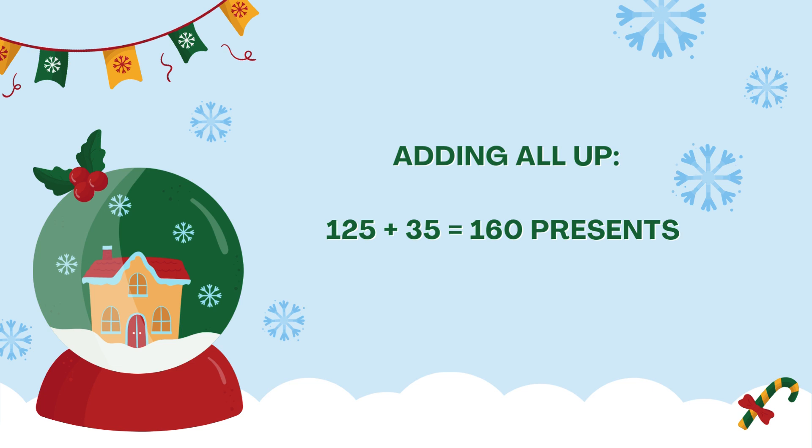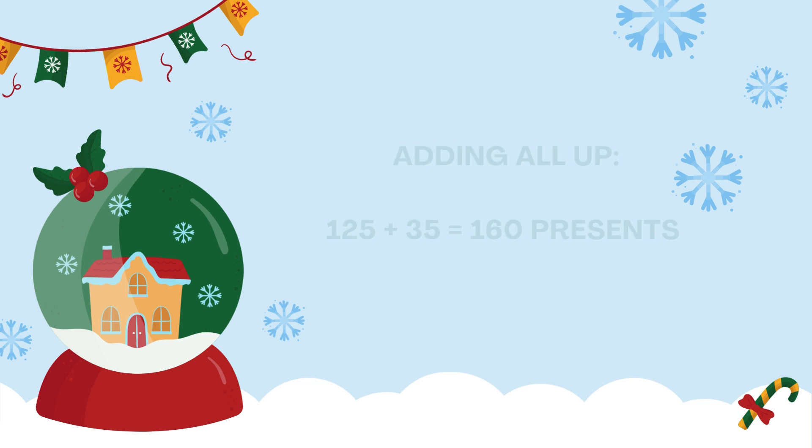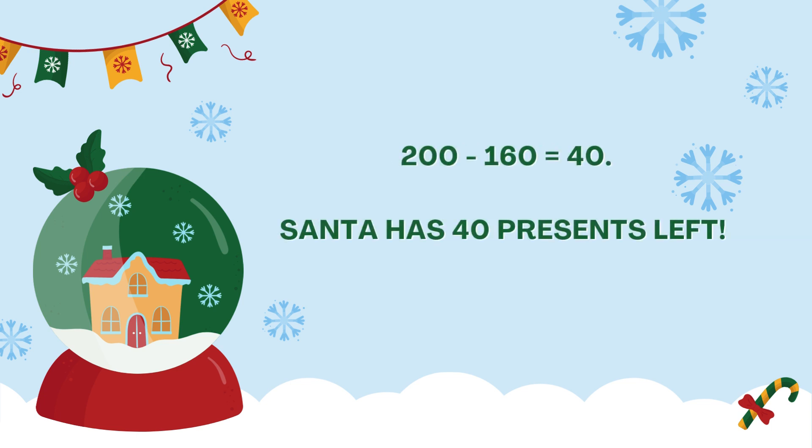Adding all the presents given out, we get 125 plus 35, which equals 160 presents. Now, we subtract the total given out from the 200 presents he started with. So, 200 minus 160 equals 40. Santa has 40 presents left after visiting all the houses.